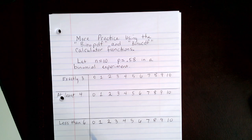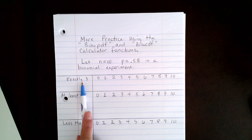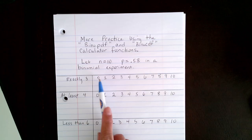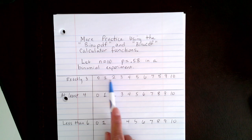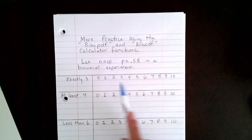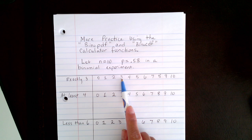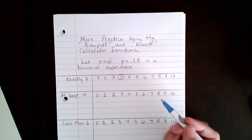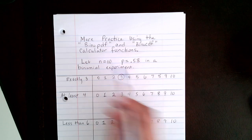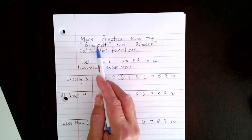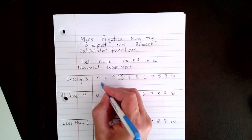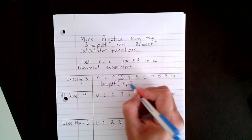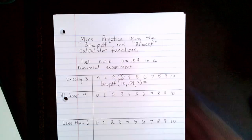Suppose we're asked to find the probability that exactly 3 men say that they are professional baseball fans. Here I have listed all the possible outcomes: exactly 0, 1, 2, 3 men saying that they are, and so on. Since I want exactly 3, I'm going to circle the 3. The function I'll use is the binomial PDF, which we use when we want exactly a certain number of successes. The number of trials is 10, the probability of success is 0.58, and I want exactly 3 successes.